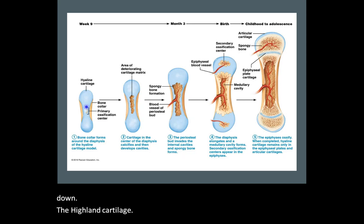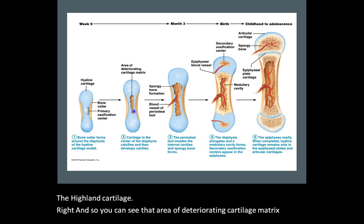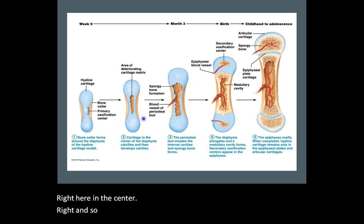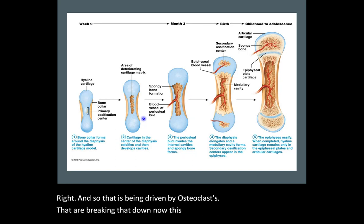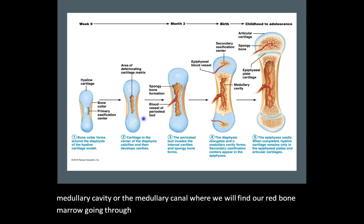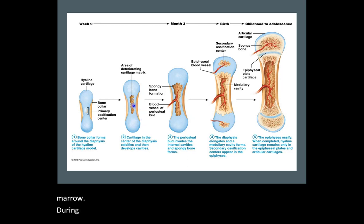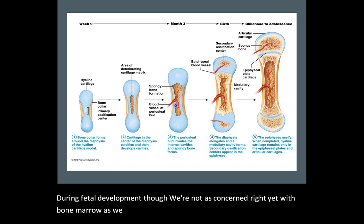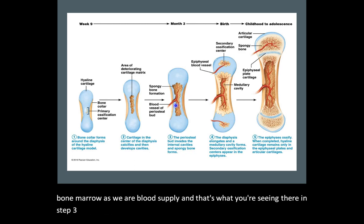You can see that area of deteriorating cartilage matrix right there in the center, driven by osteoclasts that are breaking it down. This will eventually become the medullary cavity or medullary canal where we will find our red bone marrow going through the diaphysis, and later in life, the yellow bone marrow. During fetal development, the periosteal bud is what we define as that initial blood supply going into the bone.